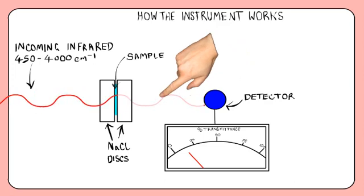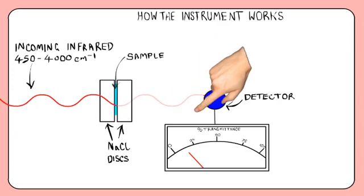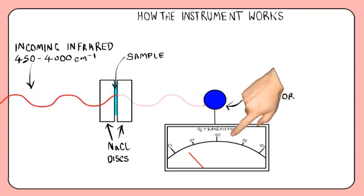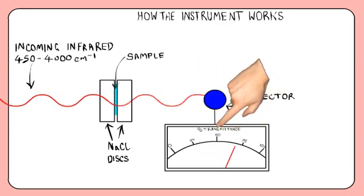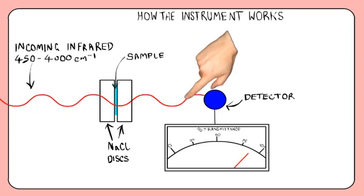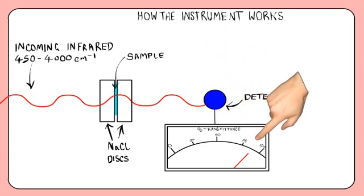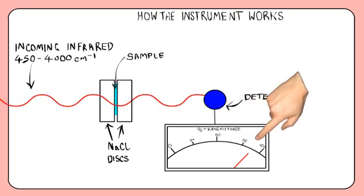When molecules absorb infrared radiation, not as much radiation passes through the sample, and so the response from the detector is low. In regions where the molecule does not absorb strongly, the response from the detector is high, as the radiation passes through the sample largely unaffected.